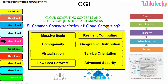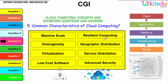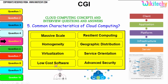Let's talk about the common characteristics of cloud computing. These are very important characteristics. First is massive scale — however big you need, it can be provided. Then homogeneity, virtualization — you can create a virtual machine and use it. Local software becomes cheaper through remote computing, so all processing is done remotely without disturbances. Geographic distribution means data and computing is geographically distributed. Service orientation means it's purely service-based, and there is also advanced security.